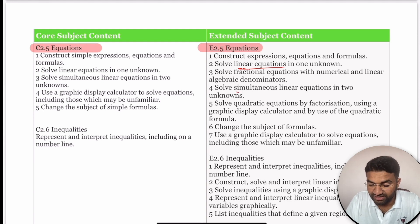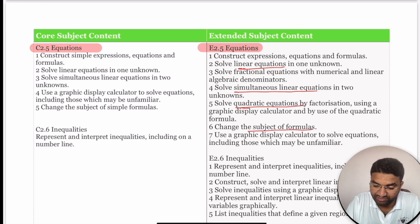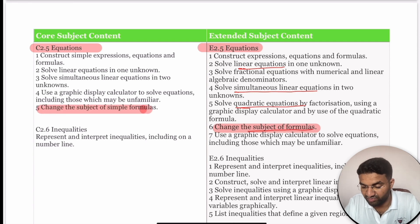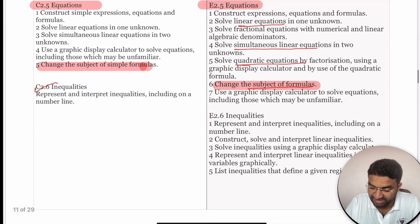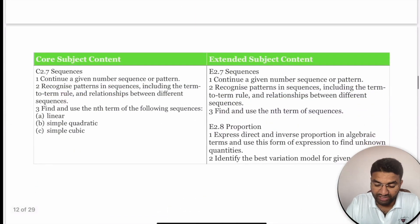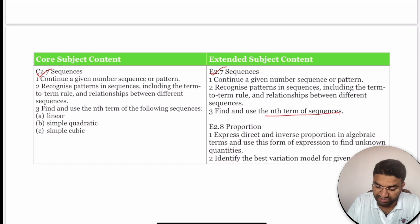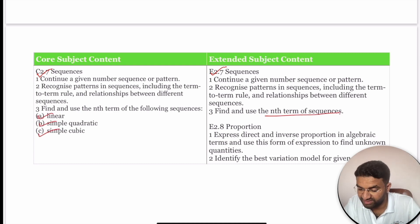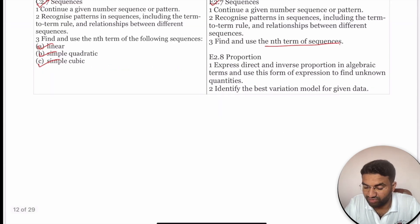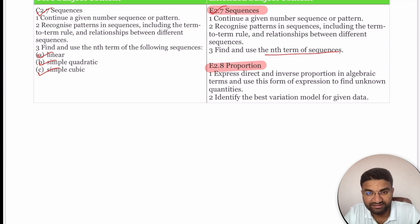Simultaneous linear equations, solving quadratic equations, and changing the subject of a formula are important topics common to both Core and Extended students. Inequalities (topic 2.6) and sequences (topic 2.7) are also covered for both — including finding the nth term and linear, quadratic, and cubic sequences. Proportion is an extra topic for Extended students, covering direct and inverse relationships.